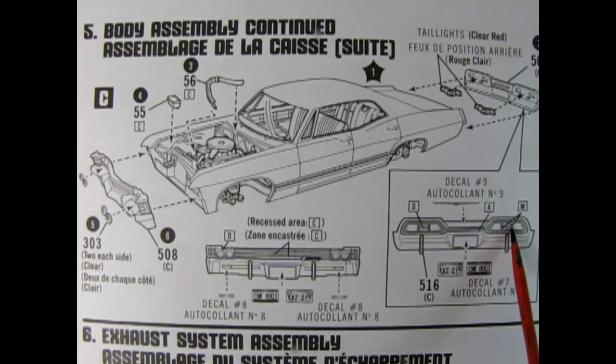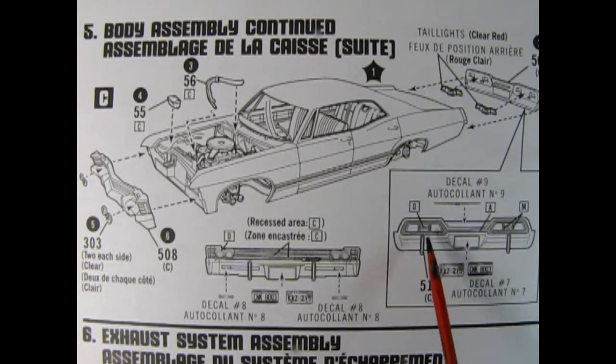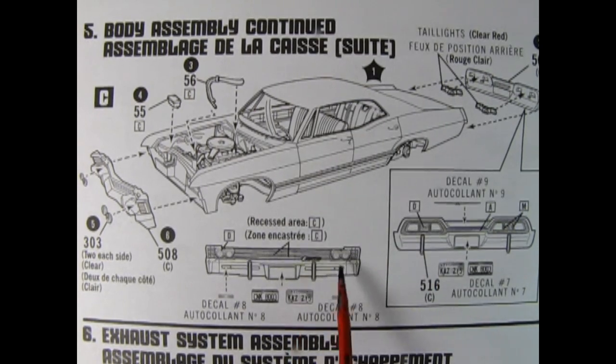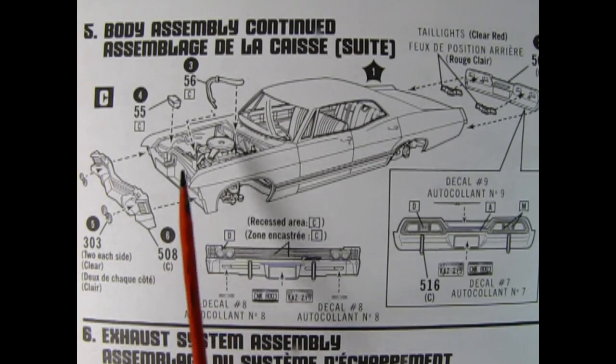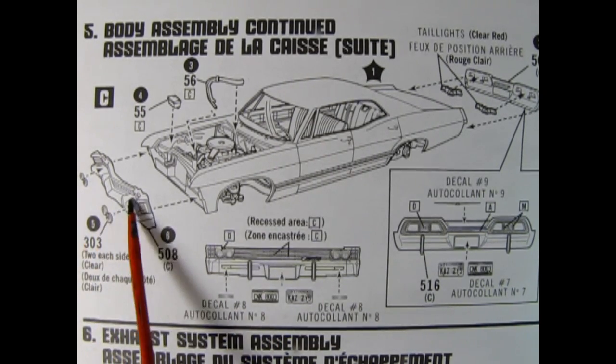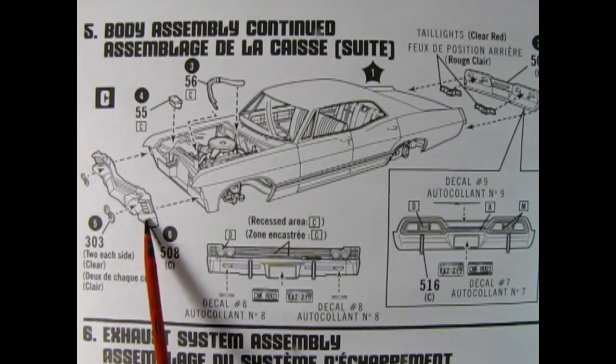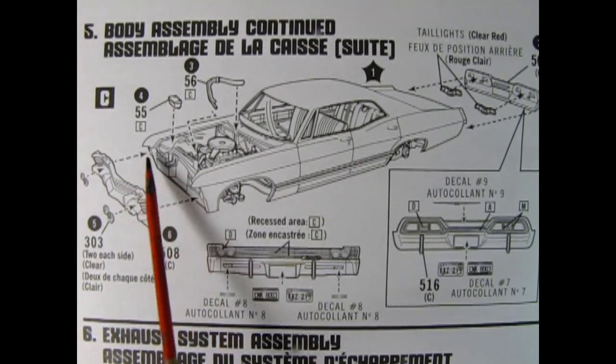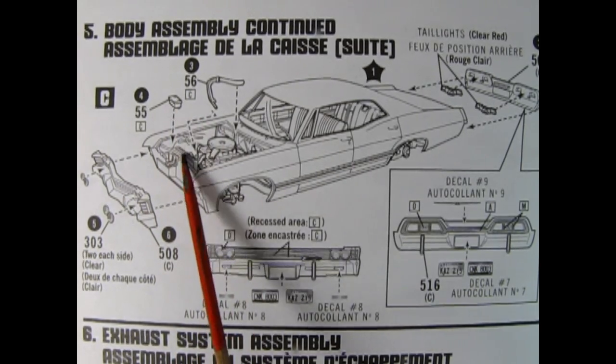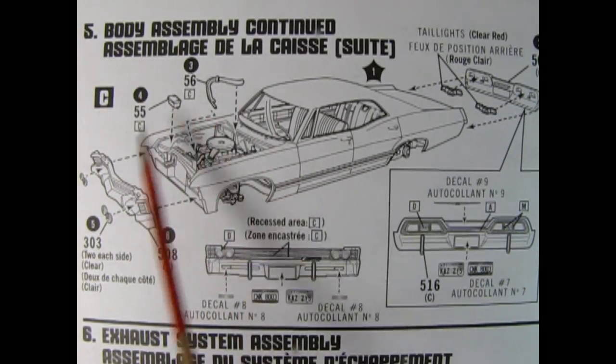Up front we have the front grille again with your choice of license plate and different decals which go in place. We have our clear headlights being glued into the headlight bezels and the front bumper gets glued up here onto the front of the fenders. We also have our windshield wiper bottle and the heater hoses.